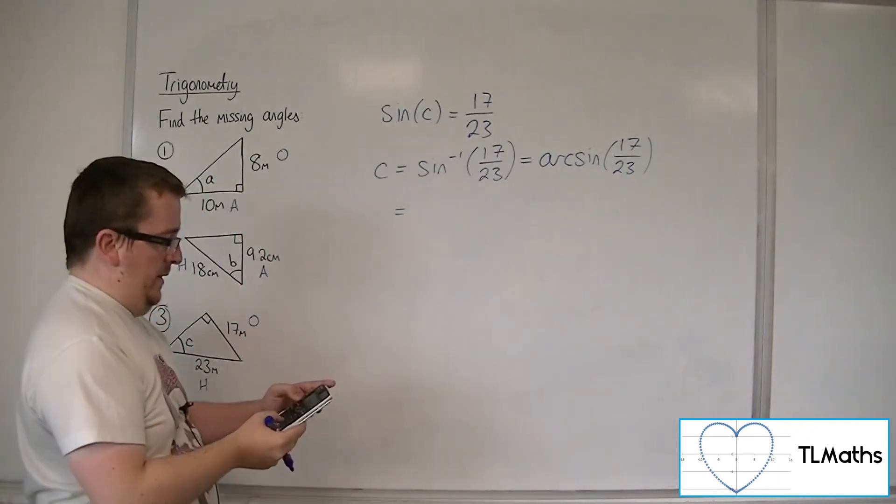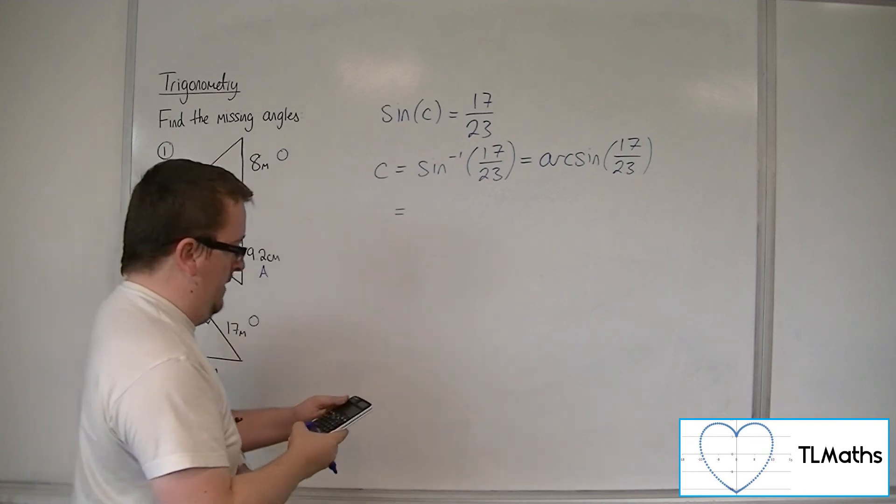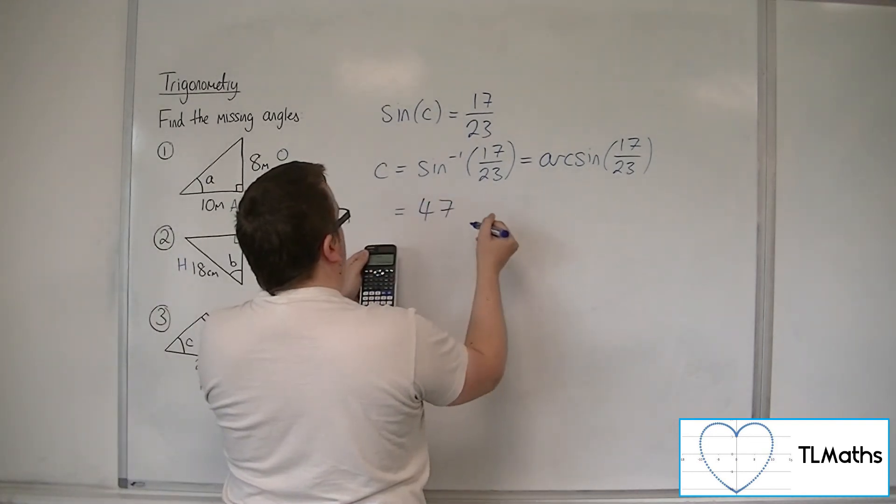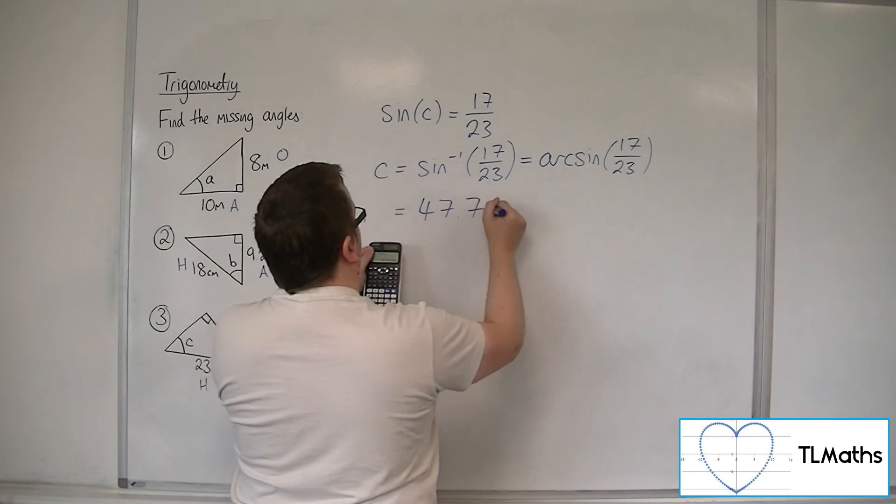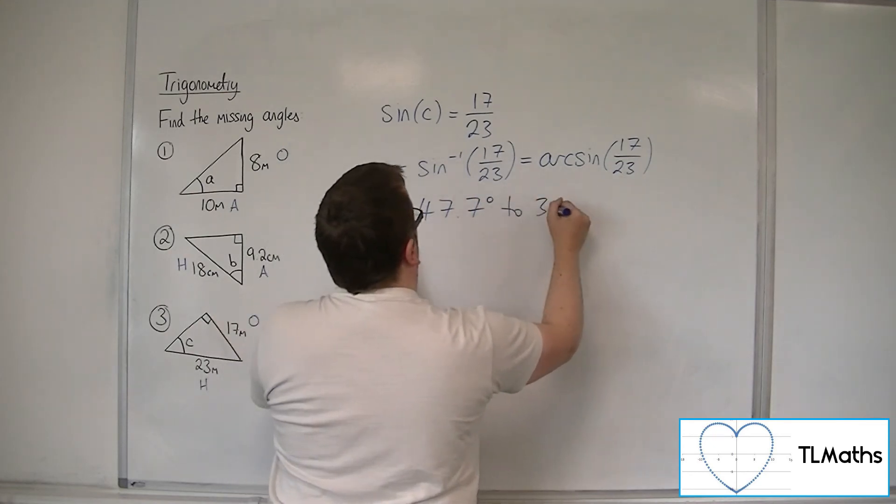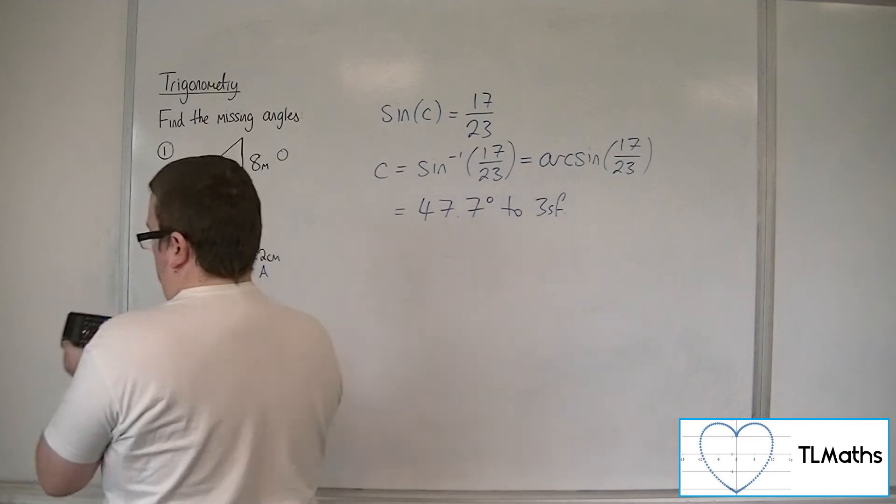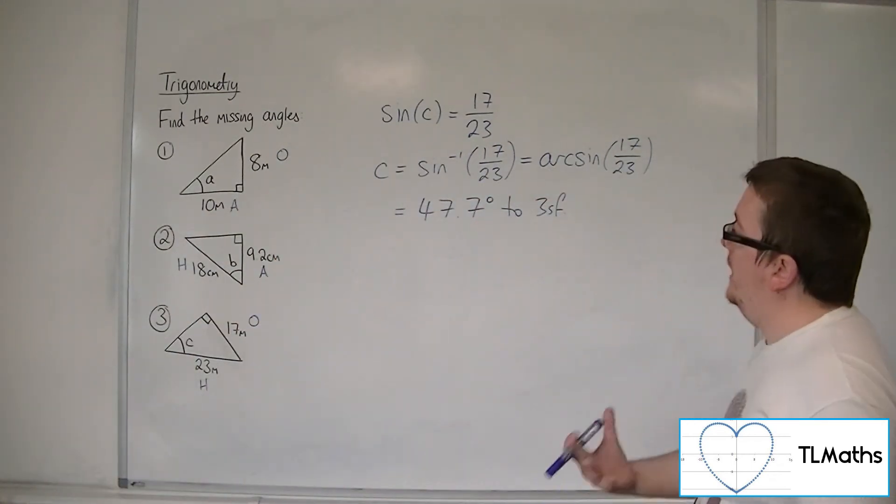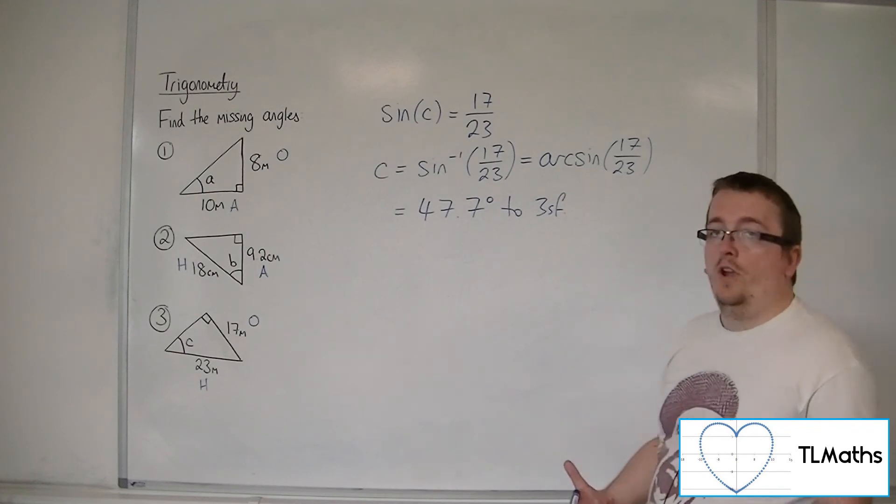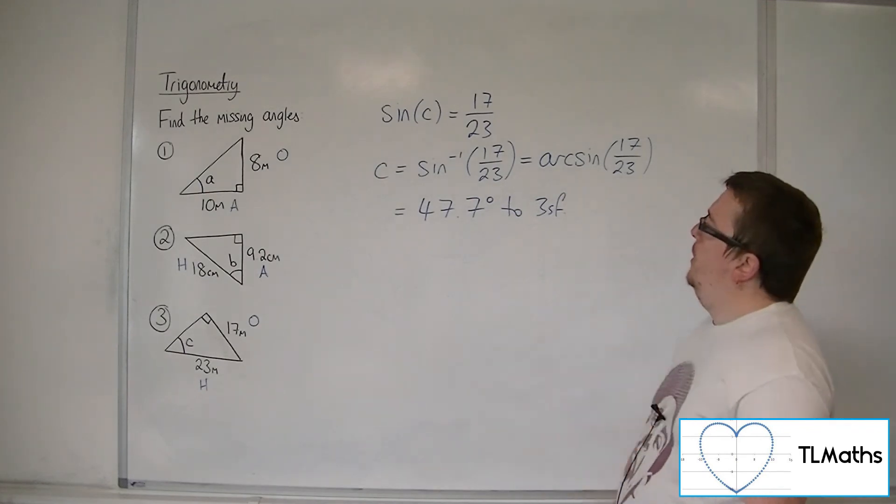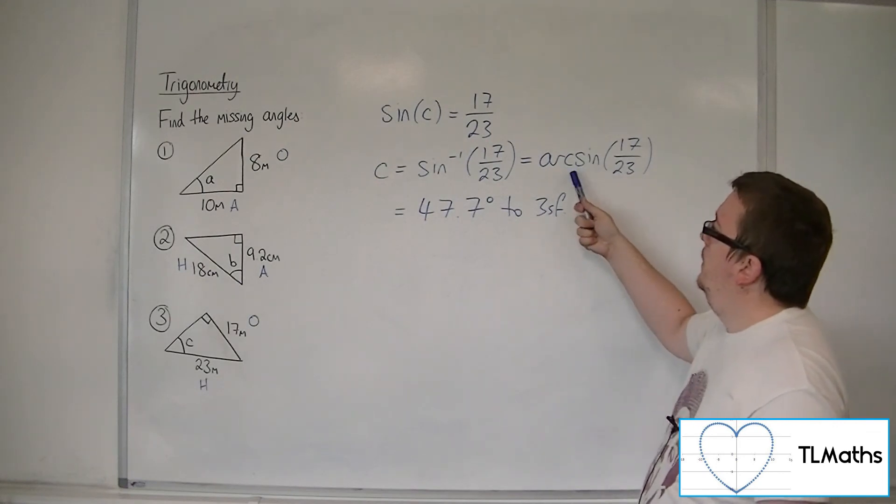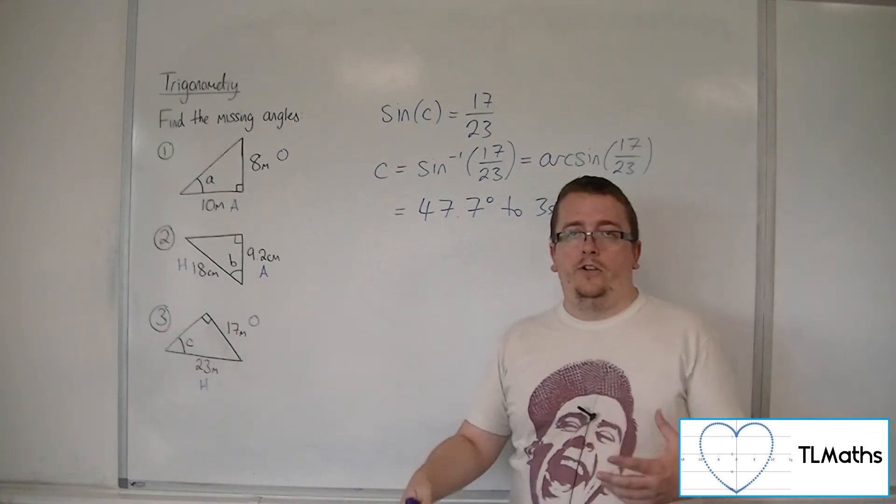So inverse sine of 17 over 23 is 47.6573, etc. So 47.7 degrees to 3 significant figures. So this is basic finding the missing angle using trigonometry from a right-angled triangle. You need to make sure you know how to do that. And also this new notation, arc sine, arc cos and arc tan.